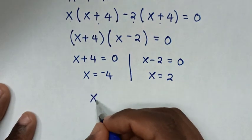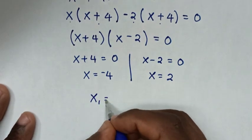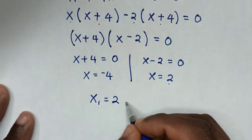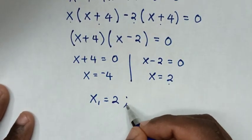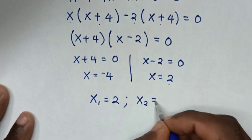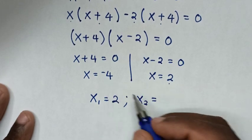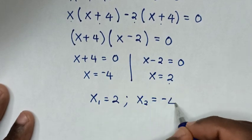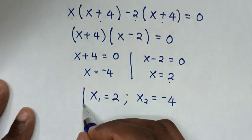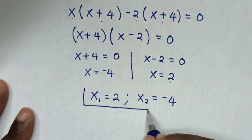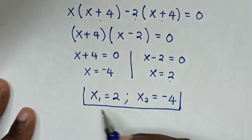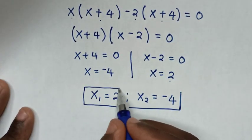Therefore, the first value of x is equal to 2, and the second value of x is equal to negative 4. So these are all the answers for the values of x in this problem.